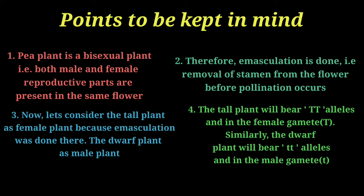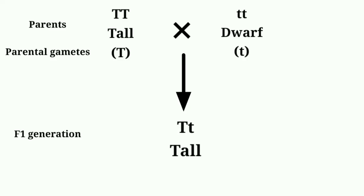The dwarf plant is considered the male plant because its stamens were intact and its female parts were removed. Point four: the tall plant has the genotype TT, so during meiosis the alleles TT will segregate and each gamete will carry a single T. Similarly, the dwarf plant has genotype tt, so each male gamete will carry a single t due to the haploid nature.